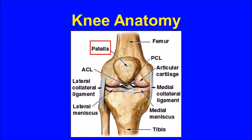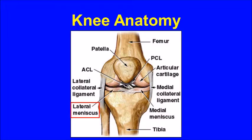Between the thigh bone and the shin bone there are two soft tissue shock absorber cartilage pads known as the meniscus. The meniscus on the inside part of the knee is called the medial meniscus and the meniscus on the outside part of the knee is called the lateral meniscus.